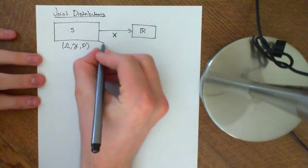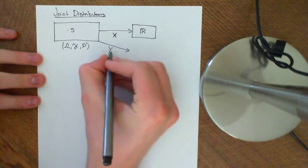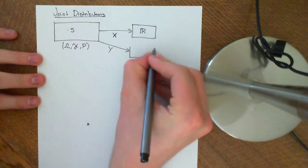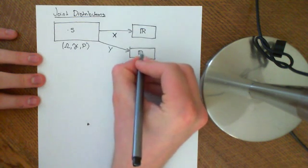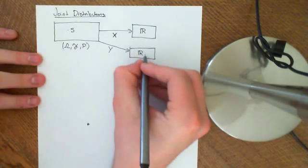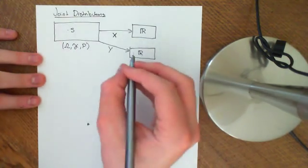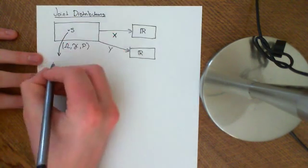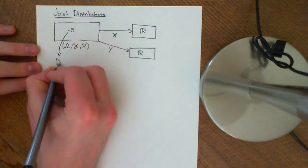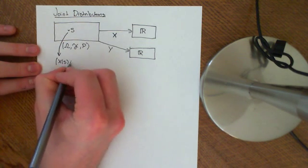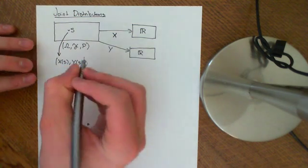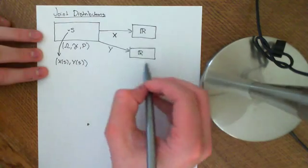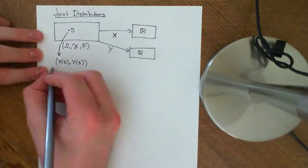In joint distributions, what you do is ascribe more than one real number to each point. So you have another random variable Y, which is also discrete and ascribes to every outcome another number Y. You can think of every point s being ascribed a pair of real numbers — X(s) and Y(s) — and think of the distribution of this pair rather than the distribution of each individually. That is the joint distribution.